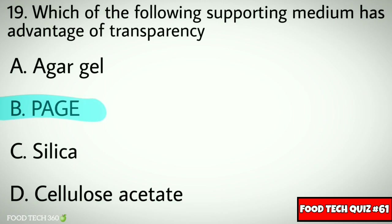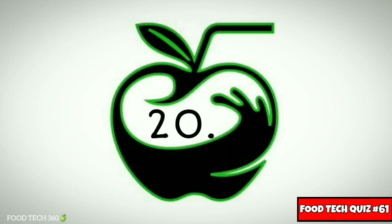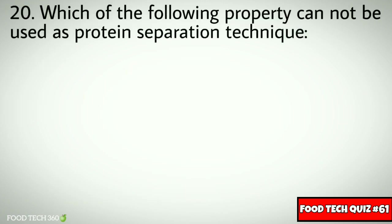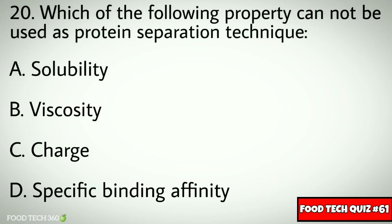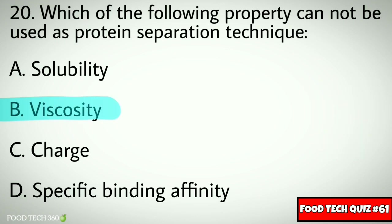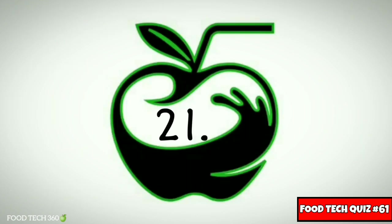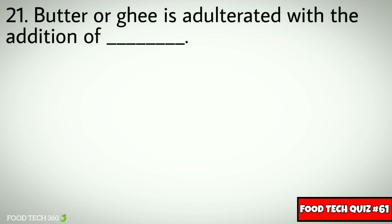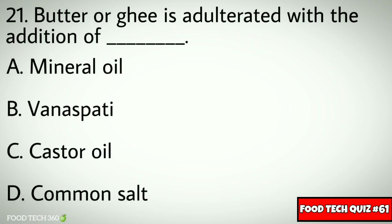Correct answer: b) PAGE. Question number twenty: which of the following property cannot be used as a protein separation technique? Options: a) solubility, b) viscosity, c) charge, d) specific binding affinity. Correct answer: b) viscosity.